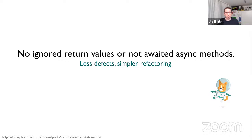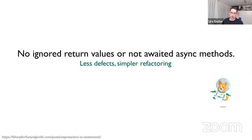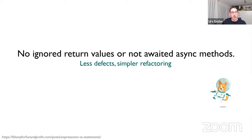Not being able to accidentally ignore return values helps us reduce defects. We had this especially when introducing async/await into our code base — you can not-await methods in C# if the containing method isn't marked as async, and the compiler allows that, causing nasty bugs. With only expressions and no statements, refactoring is simpler and the compiler can help you better.